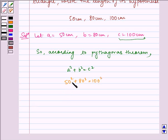That is, 50 squared is 2500 plus 80 squared is 6400, which should equal 10000.